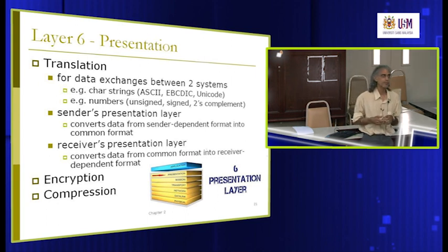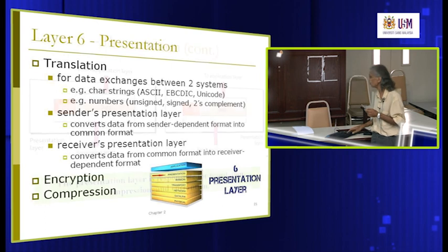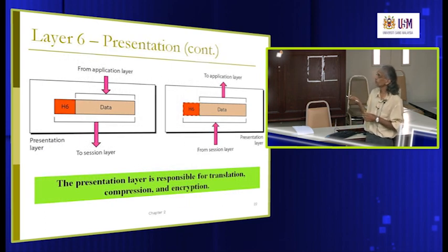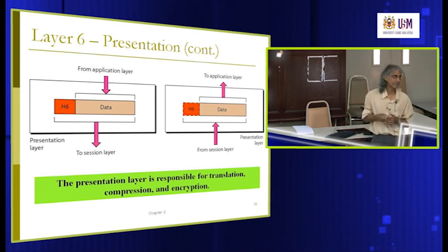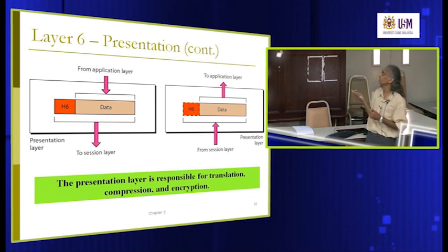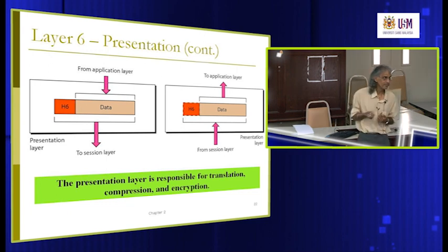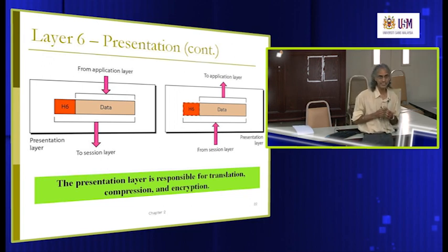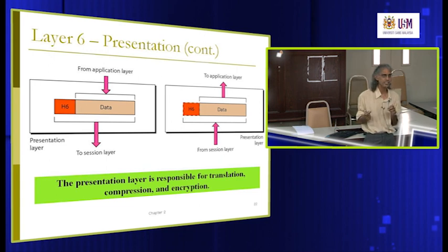The job of the presentation layer is to make sure data received from one machine to another is in the correct format, doing any translation services required. Normal translation involves character strings: when you type ABC or 123, each character is converted to binary. There are three systems: ASCII (7 bits), EBCDIC (8 bits), or Unicode (16 bits). If one machine uses ASCII and the other uses Unicode, they won't understand each other — the presentation layer resolves this.